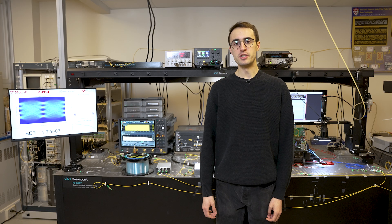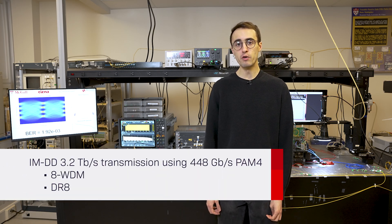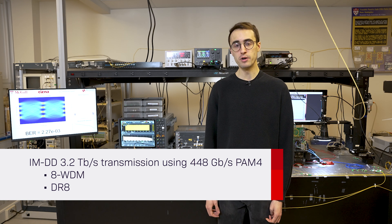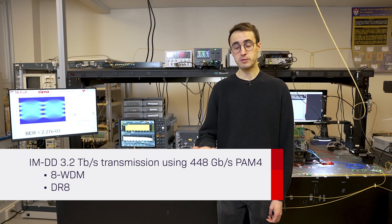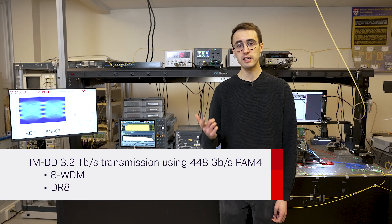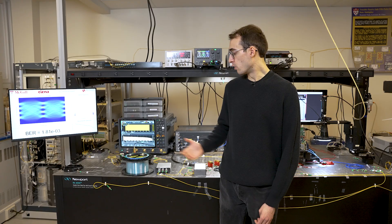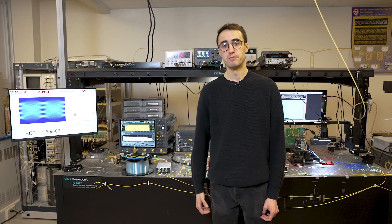With these two demonstrations, we show an IMDD 3.2 terabit per second transmission using 448 gigabit per second PAM4 with two transmission architectures. The first one being eight wavelength division multiplexing and the second being a DR8 modulation scheme. We transmitted that over 500 meters of optical fiber. Thank you.